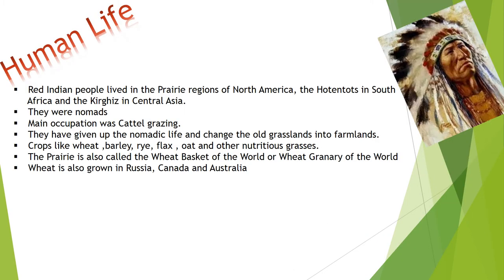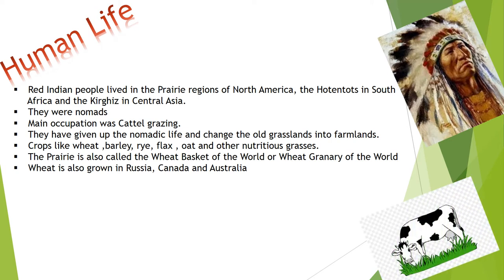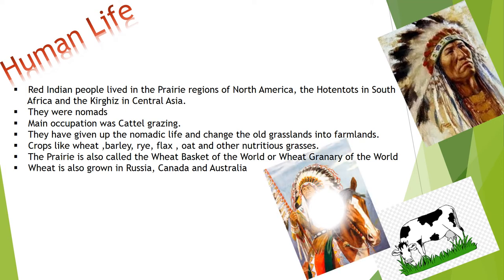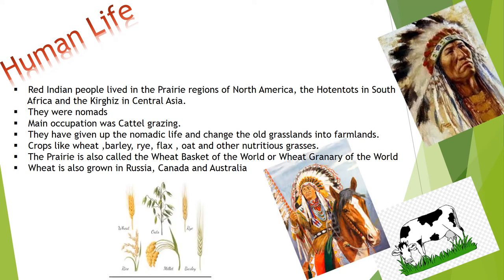Now let's talk about human life. Red Indian people lived in the prairie regions of North America, South Africa and Central Asia. They were nomads and their main occupation was cattle grazing. They have given up the nomadic life and changed the old grasslands into farmlands, growing crops like wheat, barley, rye, oat and other nutritious grasses.